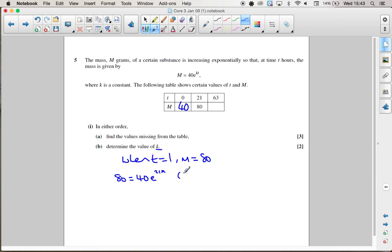So first thing I'm going to do is divide by 2. That gives me 2 equals e to the 21k. I'm then going to log both sides, so I get ln 2 equals ln e to the 21k. I'm then going to use my log rule to take that power to the front.